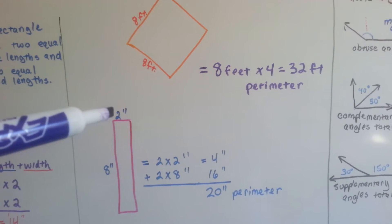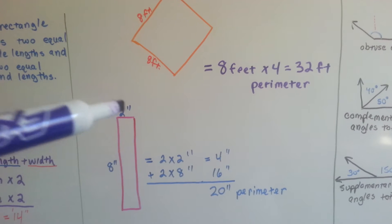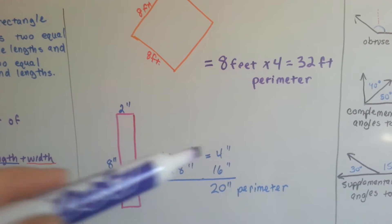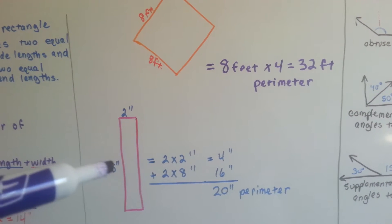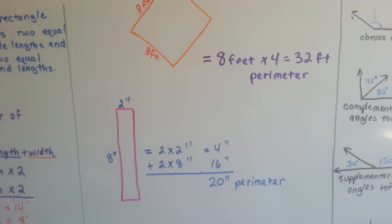Here we have a rectangle. It's got a 2 inch width and an 8 inch length. We multiply 2 times 2, which is 4 inches, and 8 times 2, which is 16 for these two sides. Add them together and get a 20 inch perimeter.